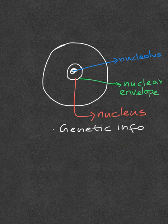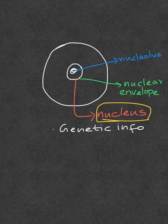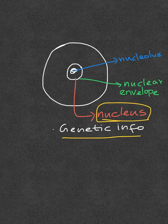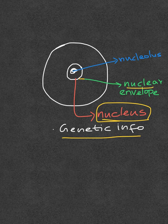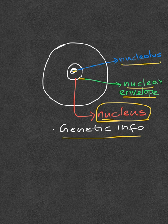Inside the cell is the nucleus — the organelle that houses the genetic information of the cell in the form of DNA. The outer covering of the nucleus is known as the nuclear envelope. Inside the nucleus is a structure called the nucleolus, where ribosomes are synthesized.